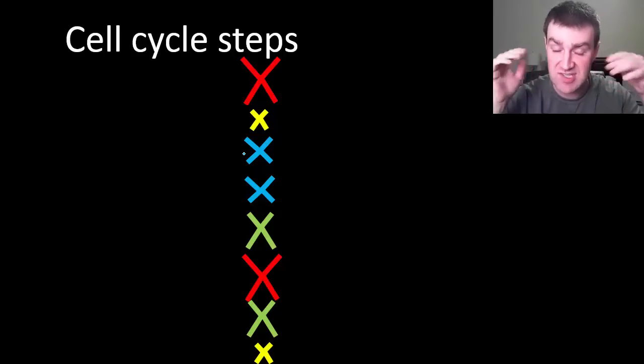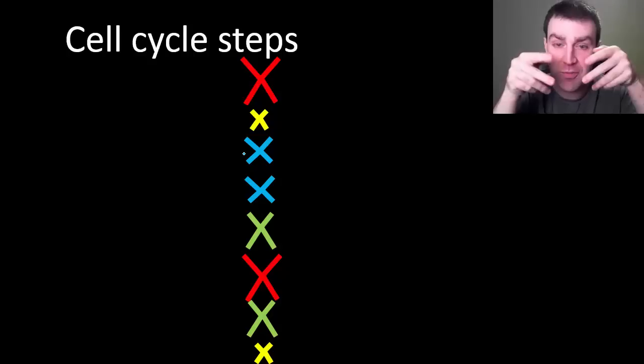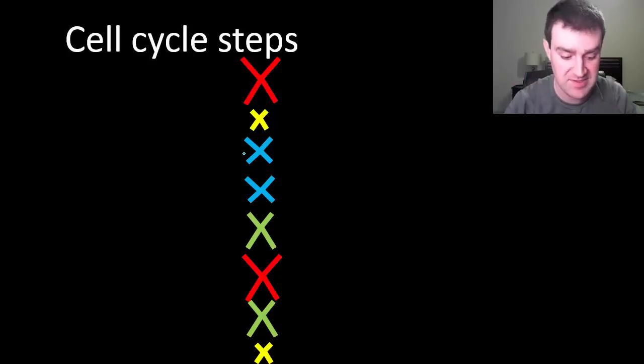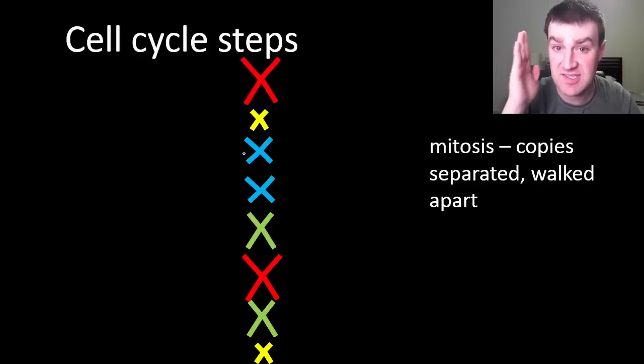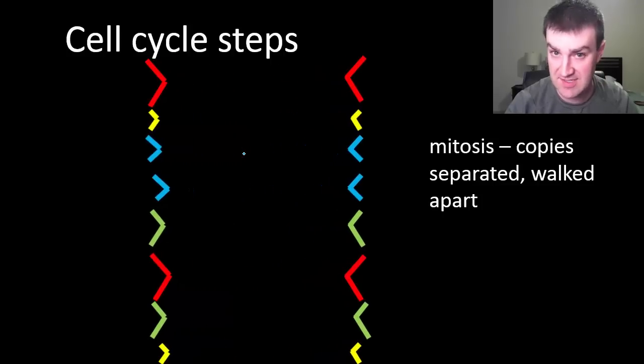As it turns out the strings, the spindle fibers don't pull the chromosomes apart. They're little proteins inside that walk the chromosome copies apart. And so this is where the exact copies finally get split up and they go to each separate cell. So maybe something like that.